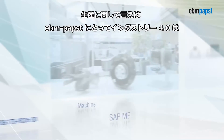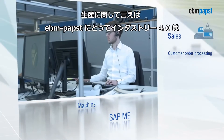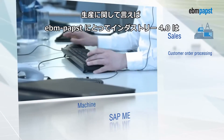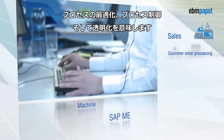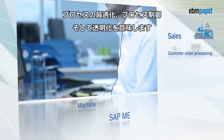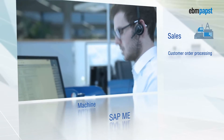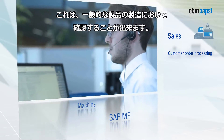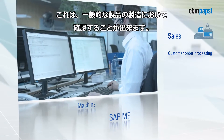In terms of production, Industry 4.0 means for ABM POPST: Process Optimization, Process Control and Transparency. This will be shown at typical product manufacturing.